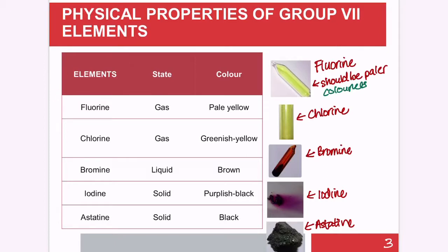Let's focus on the physical state. Fluorine is a gas, chlorine is a gas, bromine appears as a liquid, iodine is mostly in solid form, and finally astatine is solid. As you go down the group, the physical states gradually become solid.